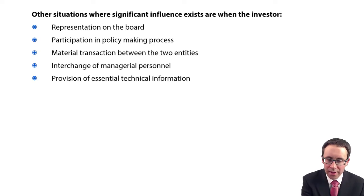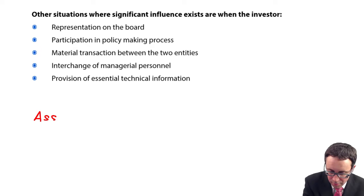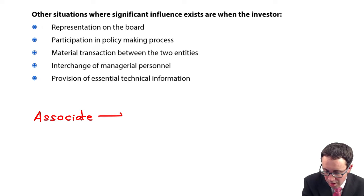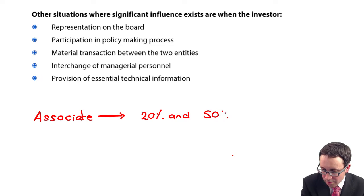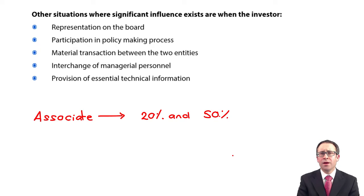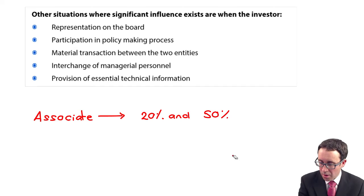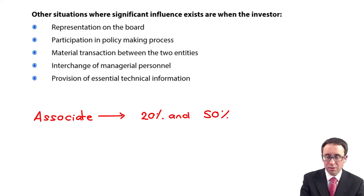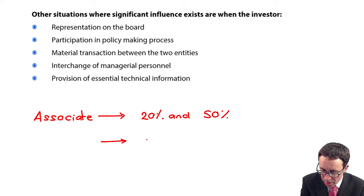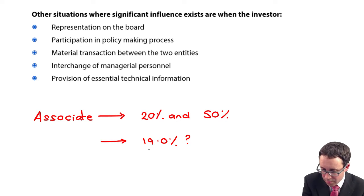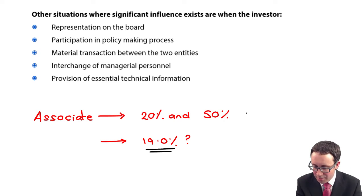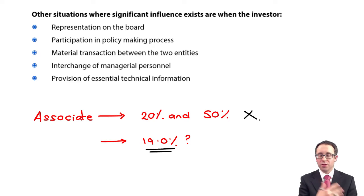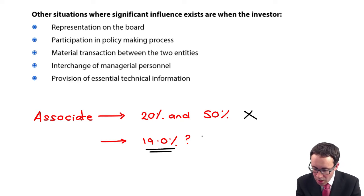Effectively what we know is that we have an associate if we own somewhere between 20% and 50%. So what happens if we own, say, 19%? If we own 19%, then technically it's not an associate, because we don't own between 20% and 50%. In that case, we would just treat it as a financial asset.